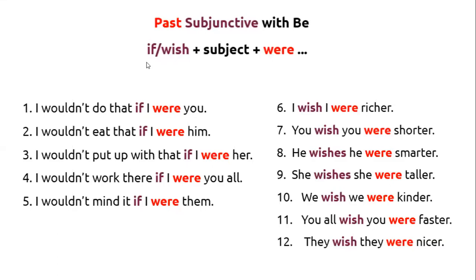Past subjunctive with be: if or wish + subject + were. I wouldn't do that if I were you. I wouldn't eat that if I were him. I wouldn't put up with that if I were her. I wouldn't work there if I were you all. I wouldn't mind it if I were them.